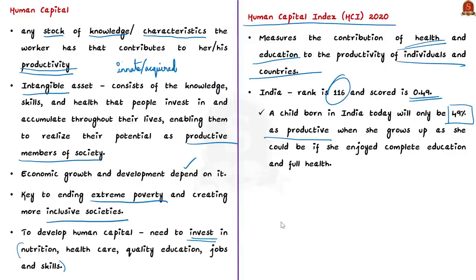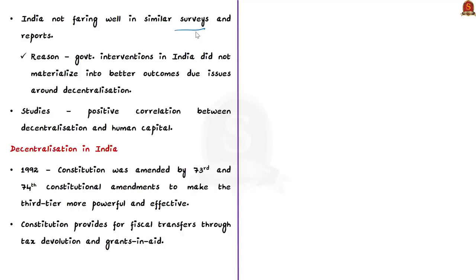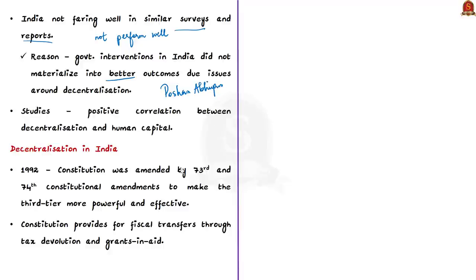Along with this, there are other surveys and reports in which India did not perform well. The main reason is that government interventions did not materialize. We have many schemes for health, education and skill such as the Poshan Abhiyan and Samagra Shiksha Abhiyan, but the problem is these schemes did not translate into better outcomes. One reason for this is India's issues around decentralization.